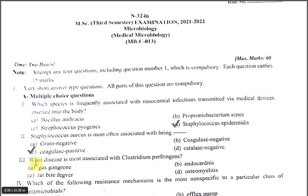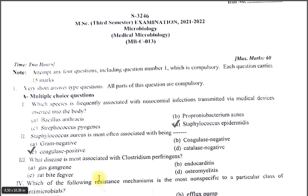Next question: what disease is most associated with Clostridium perfringens? A. Gas gangrene. B. Endocarditis. C. Rat-bite fever. D. Osteomyelitis. The correct option is A, gas gangrene.